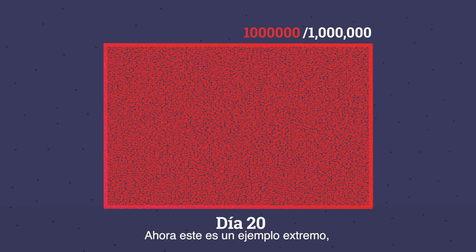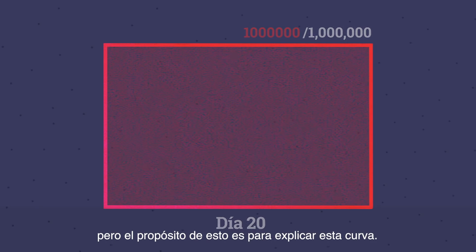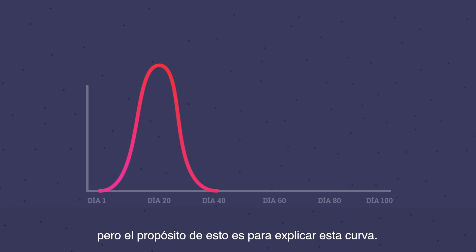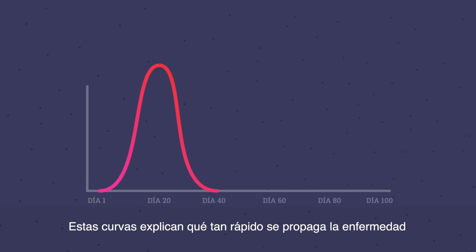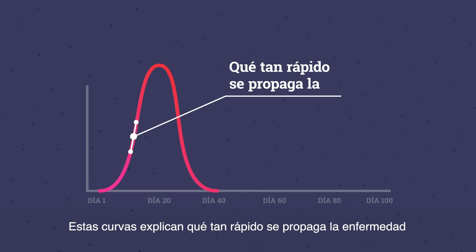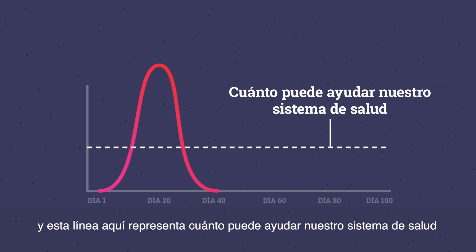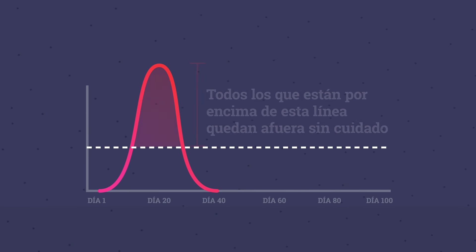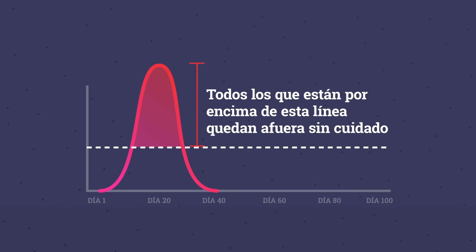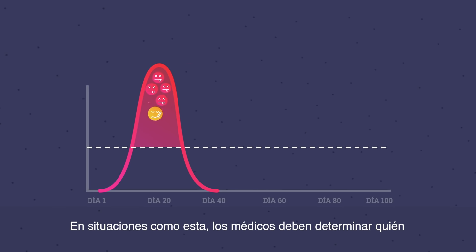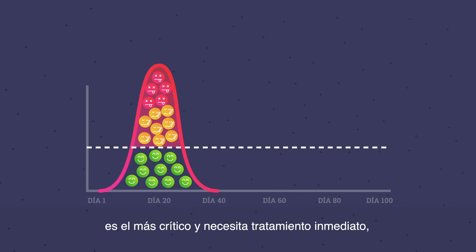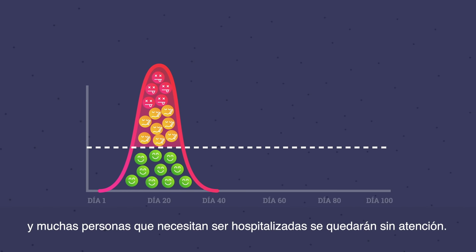Now this is an extreme example, but the purpose of it is to explain this curve. These curves represent how quickly the disease is spread, and this line here represents how much our healthcare system can assist. Everyone above this line is left without care. In situations like this, doctors have to determine who is most critical and needs immediate treatment, and many people who need to be hospitalized will be left without care.